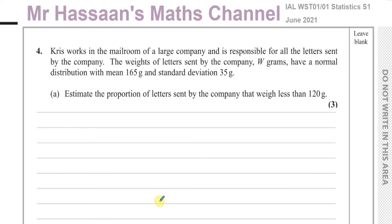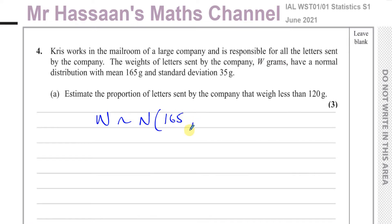Chris works in the mailroom of a large company and is responsible for all the letters sent by the company. The weights of the letters W grams have a normal distribution with a mean of 165 grams and standard deviation 35 grams, so the variance is 35 squared.